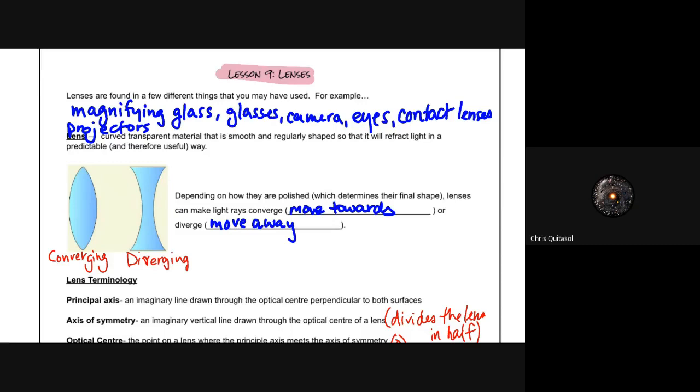glasses, cameras, eyes, contact lenses, projectors, all sorts of different things that allow us to zoom in and zoom out. A lens is a curved transparent material that is smooth and regularly shaped so that it will reflect light in a predictable and therefore useful way. That's the most important component we have to take into consideration.